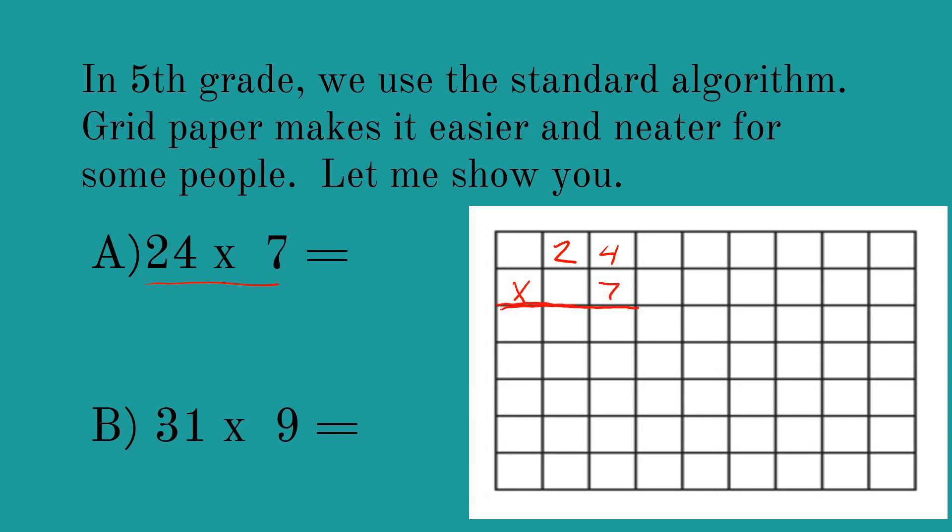And notice these boxes will give me a place to put my numbers. So I start with the ones place: 7 times 4, which is 28, and then 7 times 2, the tens times the ones: 7 times 2 is 14, plus 2 gives me 16, for a total of 168.